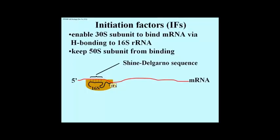So what do these initiation factors do? One of them enables the 30S to bind to the messenger RNA. The binding is H-bonding. The beginning of the mRNA — a sequence called the Shine-Dalgarno sequence, discovered by these two researchers, near the 5' end of a message — recognizes complementary bases in the 16S ribosomal RNA of the bacterial small subunit. Initiation factors facilitate that interaction. Some initiation factors are actually there to prevent the 50S subunit from binding, and you'll see why that's necessary.